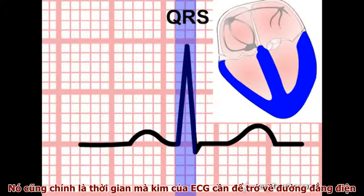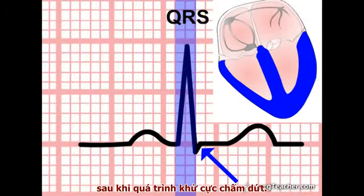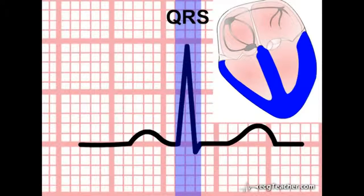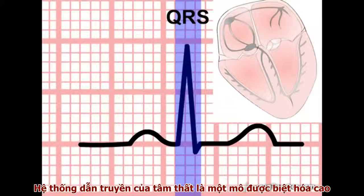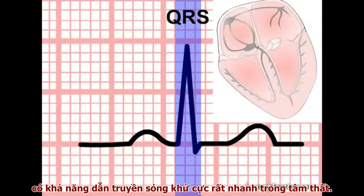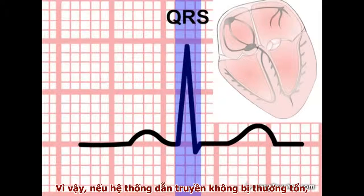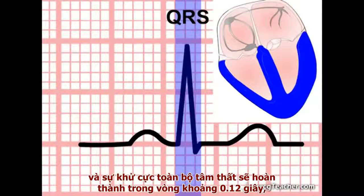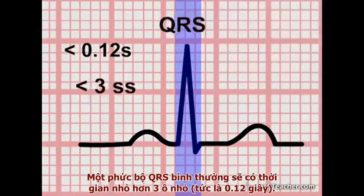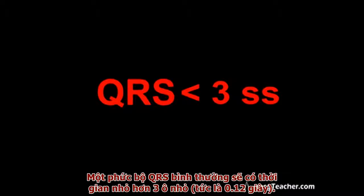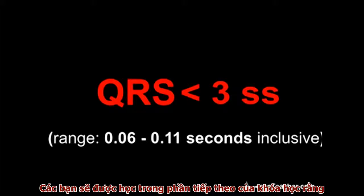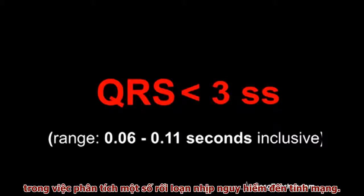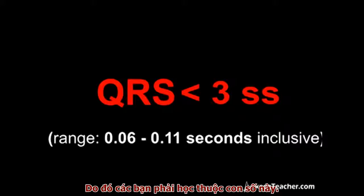The QRS duration also includes the time taken for the recording needle to return to baseline when the flow of depolarizing current in the ventricles has ceased. The conducting system of the ventricles is highly specialized tissue capable of transmitting the depolarization wave rapidly. With an intact conducting system, depolarizing current is delivered to all sectors of the ventricles in a very short time, and ventricular depolarization is complete within 0.12 seconds — three small squares. A normal QRS complex is less than three small squares in width. The width of the QRS complex is absolutely central to the ECG interpretation of life-threatening arrhythmias. You must remember this number.